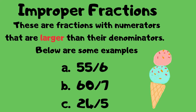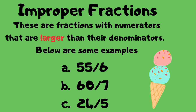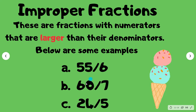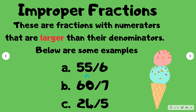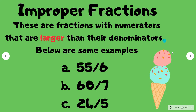Improper fractions are fractions with numerators that are larger than the denominators. Below are some examples: 55 divided by 6, 60 divided by 7, and 24 divided by 5. You could think of an ice cream effect — a large amount of ice cream on top and a small cone at the bottom.